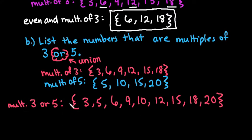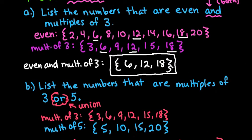Any time you have 'or,' you combine the two together. If you have 'and,' you find the overlap or the intersection of the two.